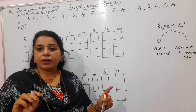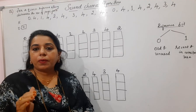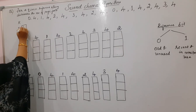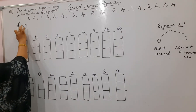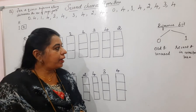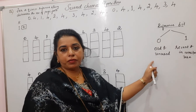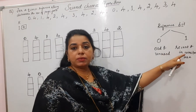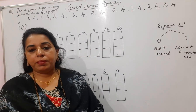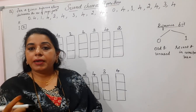Whenever a page is already residing in main memory and is accessed again, you set its reference bit to one. Initially all pages have reference bit zero. If a page fault occurs and the page is already present, you do not replace it — instead you set its reference bit to one. A reference bit of zero means the page is old and unused and can be replaced (similar to FIFO), while a reference bit of one means the page is recently used and its replacement should be deferred.